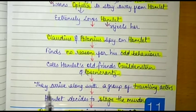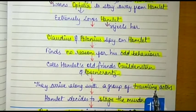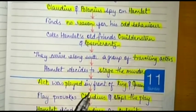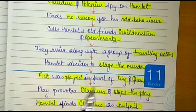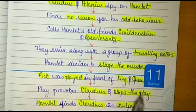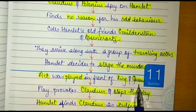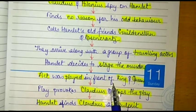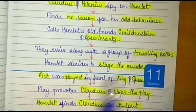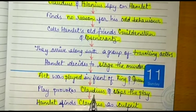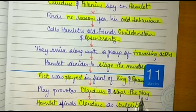Guildenstern and Rosencrantz both arrive with traveling actors. Hamlet decided to stage the murder because he wanted to see the change of expression of Claudius — if Claudius is the culprit, his expression will change; if not, it will be normal. So a play was staged in front of the king and queen — Claudius and Gertrude, the mother of Prince Hamlet — and that play was written by Prince Hamlet himself.